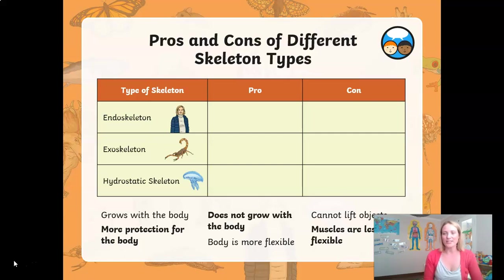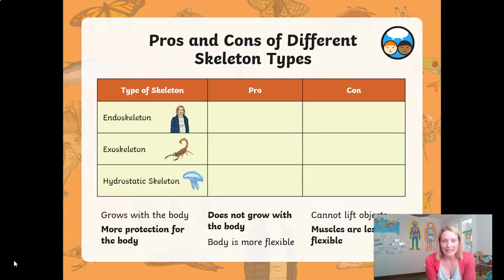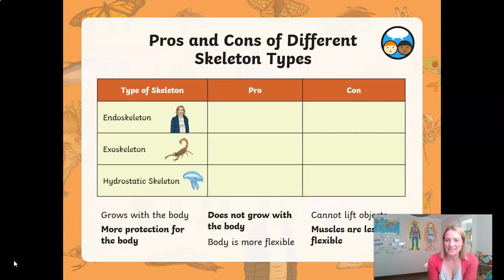Let's have a look at the table I've put in front of you — it shows the pros and cons of the different types of skeletons. Underneath the table are a list of statements. I want you to pause the video now and match the pros — the benefit of each type of skeleton — and the cons, meaning the disadvantages, of that type of skeleton. Take some time to pause the video; when you unpause, we'll go through the answers.